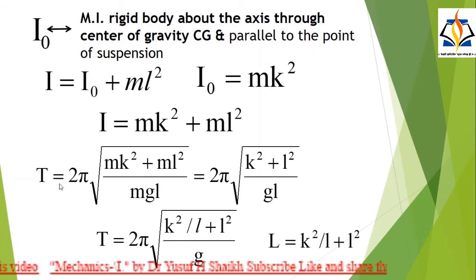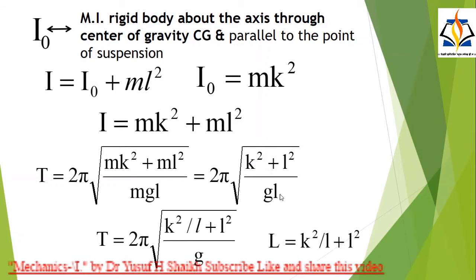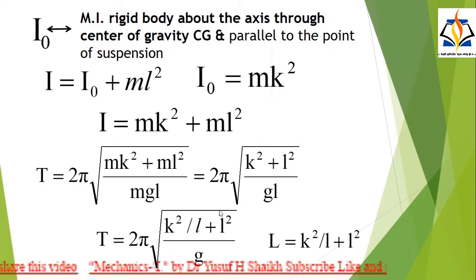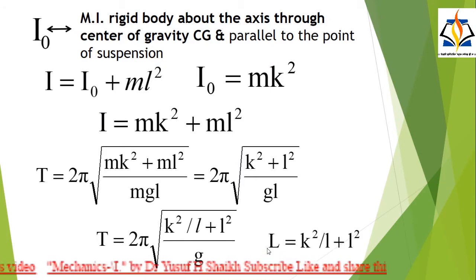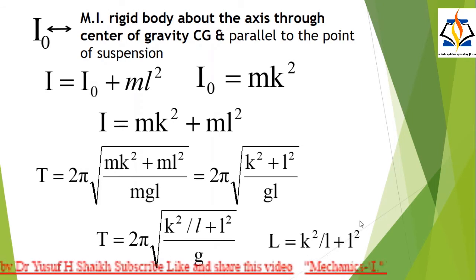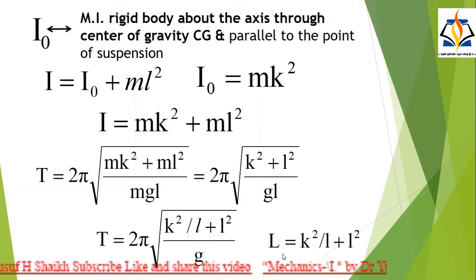The period is equal to 2π, with M cancelling out, giving √((k² + L²)/(gL)). Taking L into the denominator, it becomes T = 2π√(k²/L + L) / √g. The quantity (k²/L + L) is called the length of the equivalent simple pendulum, denoted by capital L.